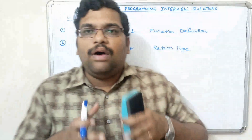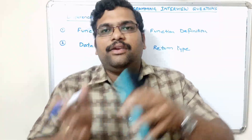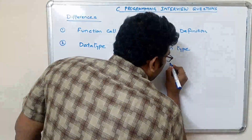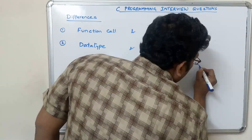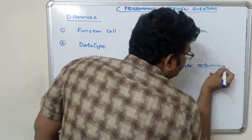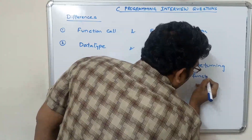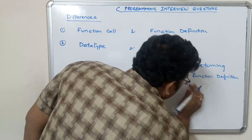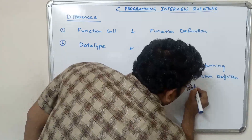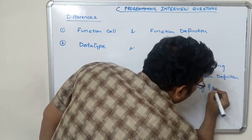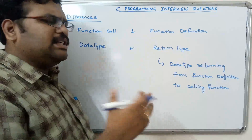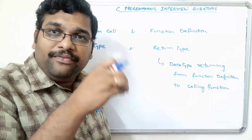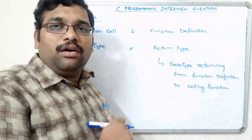Return type means what type of data the function is returning to its parent function — it is also a data type. There are two functions: the calling function and the called function. The function in which we write the reference is called the calling function, and the function which is called is called the called function.